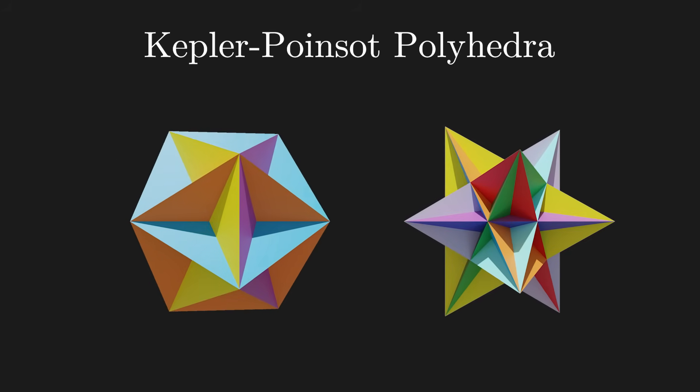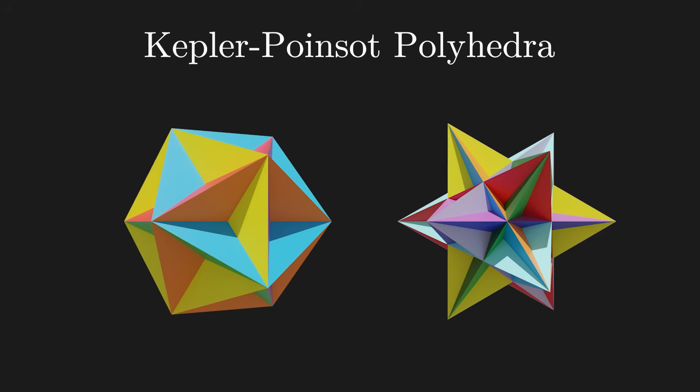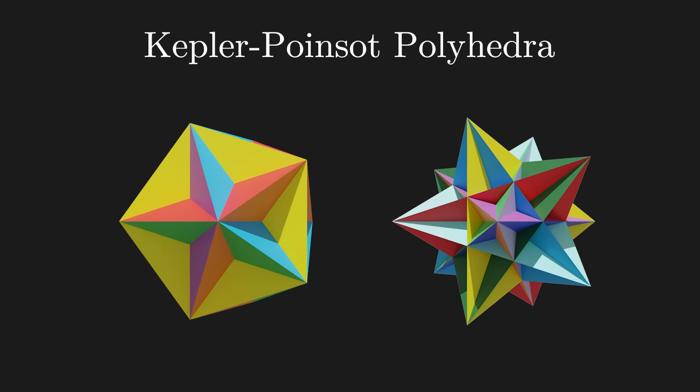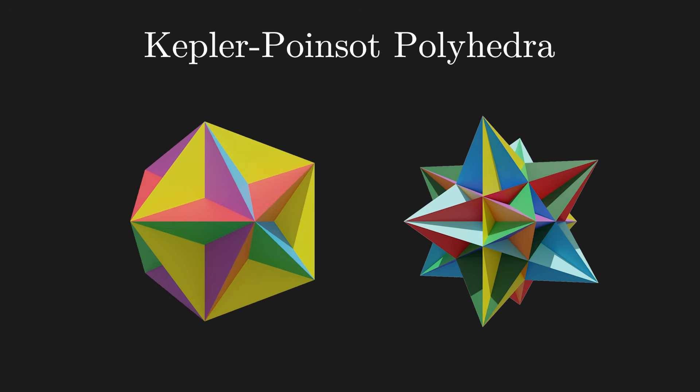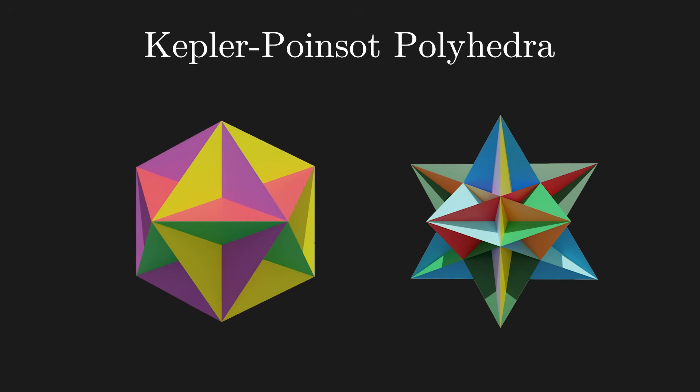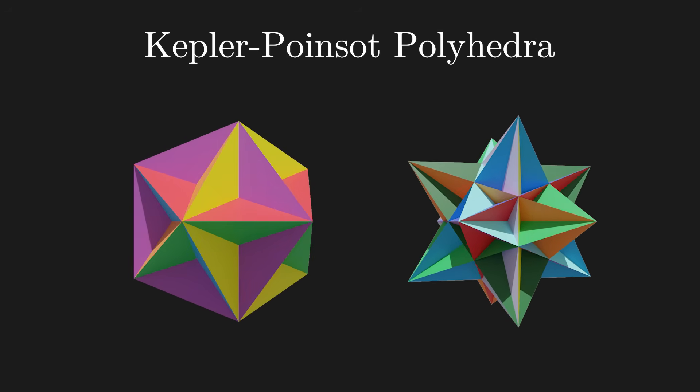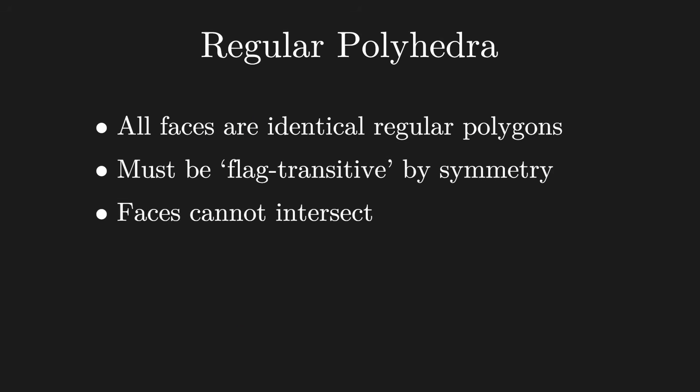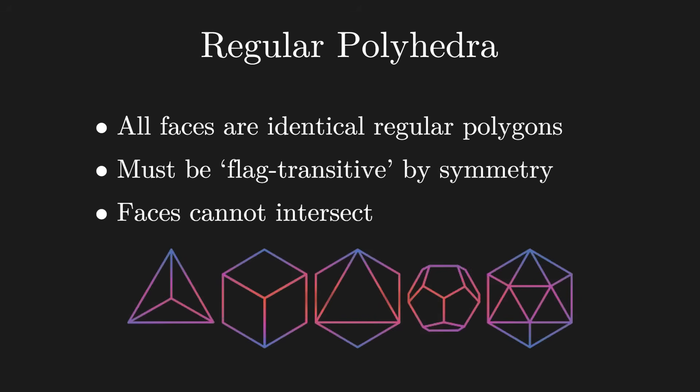Now that still leaves the Kepler Poisson polyhedra? They still meet both other requirements, so they are regular. But they're typically not considered polyhedra, because the faces self-intersect. I mean, they are really cool, but once you add this last rule, you get exactly the five platonic solids.